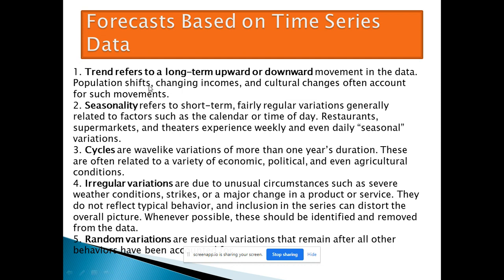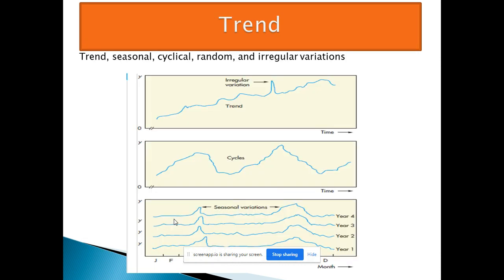Trend refers to a long-term upward or downward movement. Seasonality means you can observe the season and cycles — one cycle goes up and down and then up again. Irregular variants have no such cycle, no such seasonality, and no dependency or prediction. Random variation, also called residual variation, is mainly what remains after all other behavior has been accounted for.